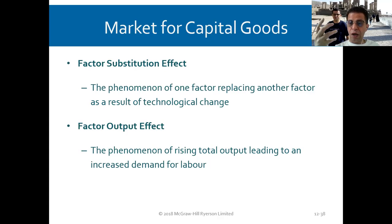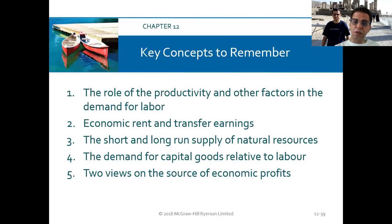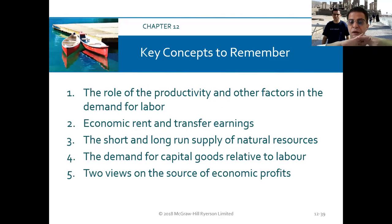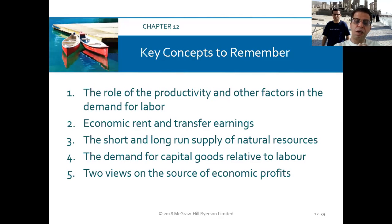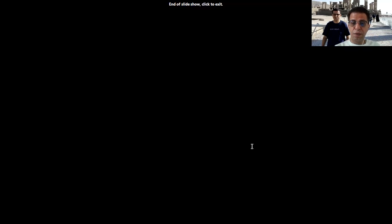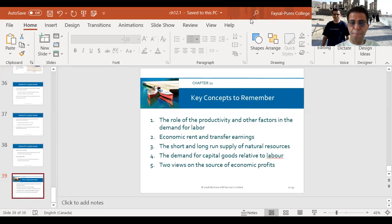In this chapter we covered: the role of productivity and other factors in the demand for labor, economic rent and transfer earnings, the short and long-term supply for natural resources, the demand for capital goods relative to laborers, and the other sources of economic profit. Thank you.